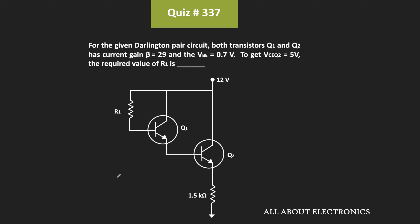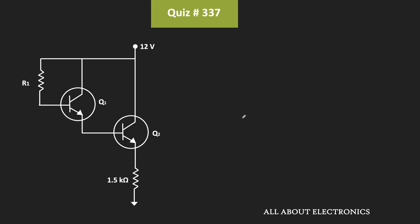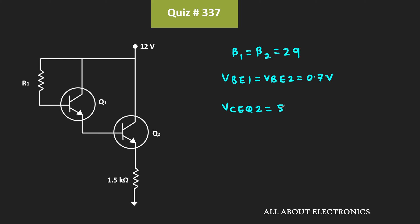Moreover, the base emitter voltage of both transistors is equal to 0.7V. We have been asked to find the value of R1 such that the collector emitter voltage of the second transistor is equal to 5V. So β1 = β2 = 29, Vbe1 = Vbe2 = 0.7V, and the required Vceq2 = 5V.